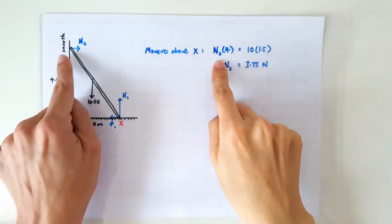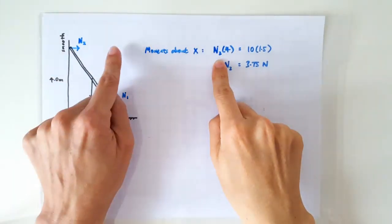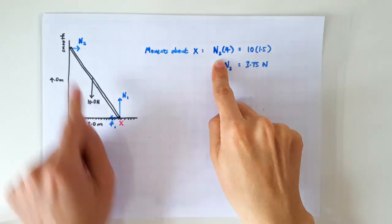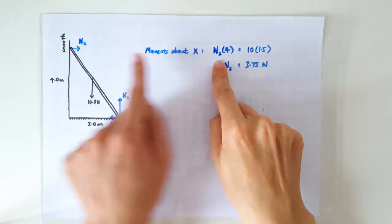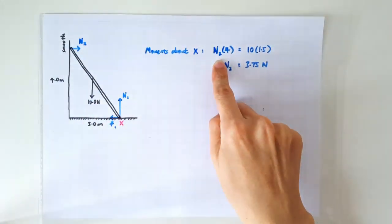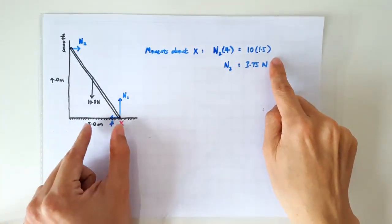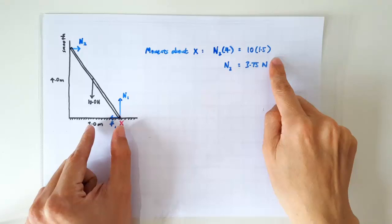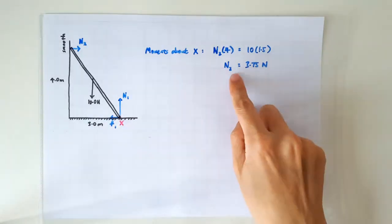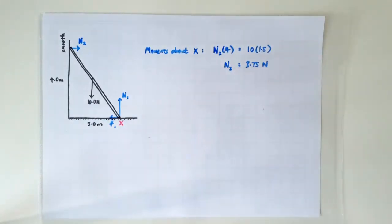So we have N2 times the perpendicular distance of 4 meters. See, a horizontal force must have a vertical perpendicular distance. And this must be balanced by 10 newtons times the perpendicular distance of 1.5 meters. So from here we solved N2 is actually 3.75 newtons.